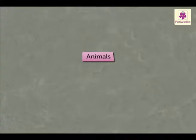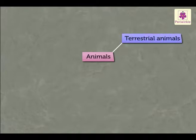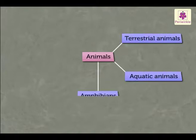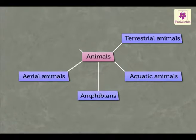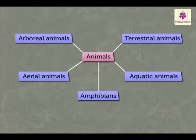Animals can be classified into Terrestrial Animals, Aquatic Animals, Amphibians, Aerial Animals and Arboreal Animals according to their habitats. Let's learn more about them.